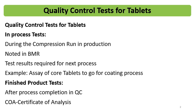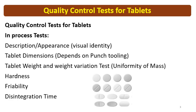Finished product tests include those tests performed after completion of the processing, done in QC. QC will report the results into the COA, that is certificate of analysis. In the current video, we are going to see the in-process tests. In-process tests include: description or appearance, tablet dimensions, tablet weight and weight variation test, hardness testing, friability testing, and disintegration time.